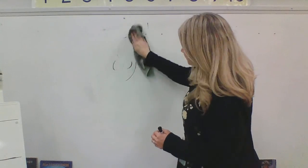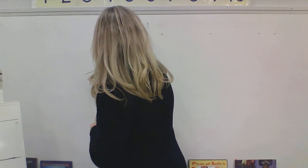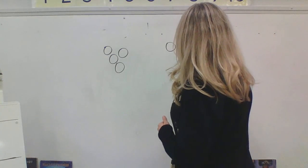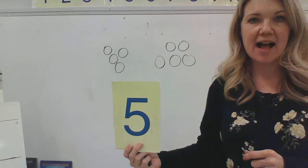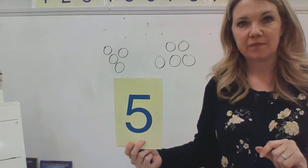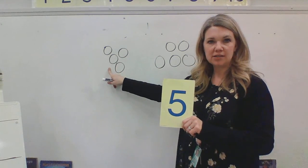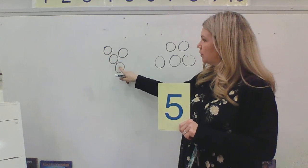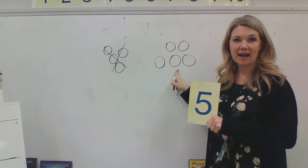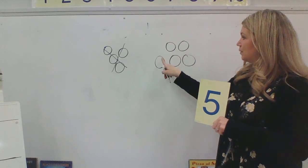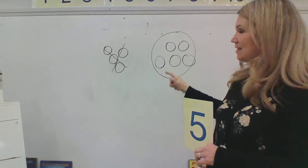Let's do one more of those together, my friends. I'm going to erase. Okay, I'm going to draw some circles again. Are you ready? Which group has five circles? Does this one have five circles? One, two, three, four — it does not have five circles. Does this group have five circles? One, two, three, four, five. Yes, it does have five circles. This is the number five, and this has five circles.